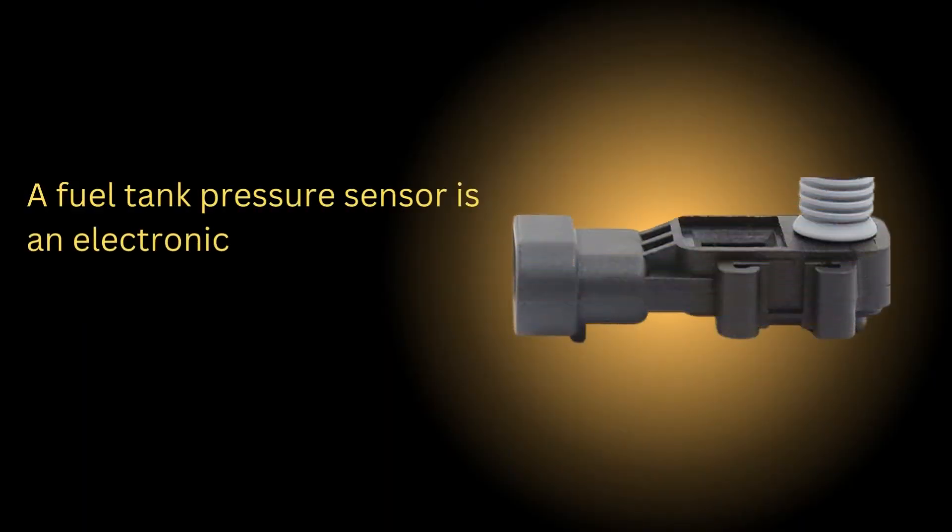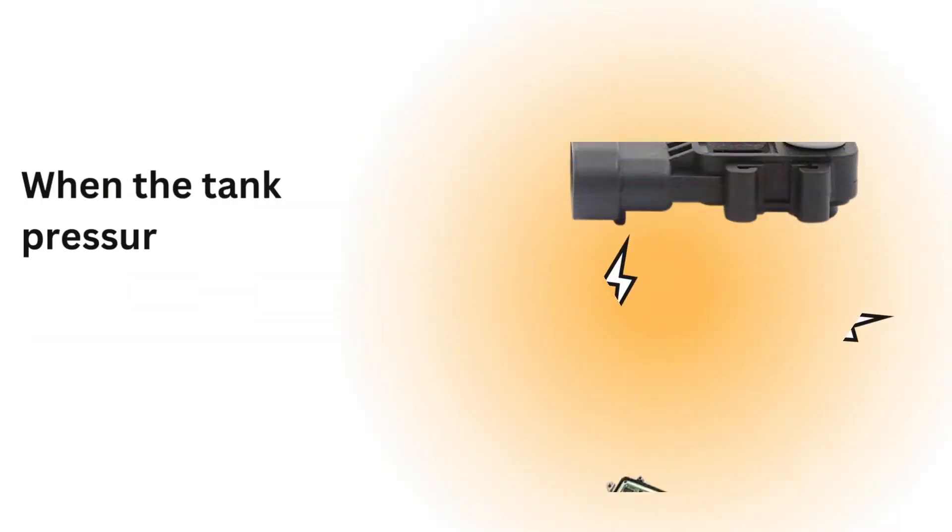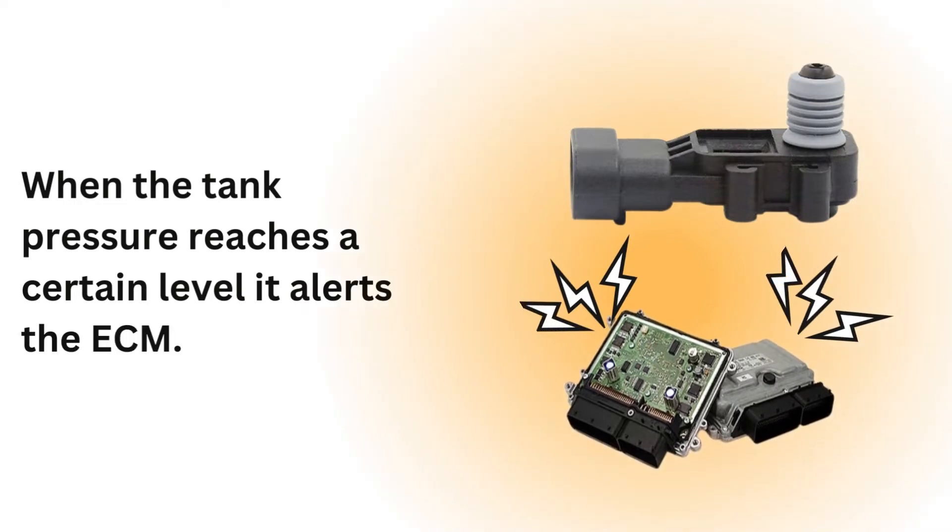A fuel tank pressure sensor is an electronic device that measures the pressure of the fuel in the car's gasoline tank. When the tank pressure reaches a certain level, it alerts the ECM.